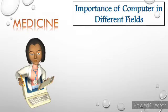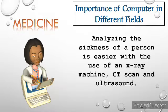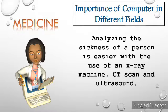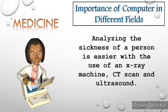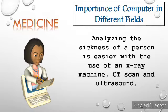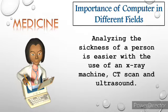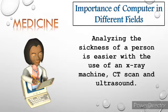Number 2: Medicine. Different cases ranging from simple to severe illnesses are somehow addressed with the use of technology. Analyzing the sickness of a person is easier with the use of an x-ray machine, computerized tomography or CT scan, and ultrasound. Doctors can make their diagnosis accurate through the use of these machines.